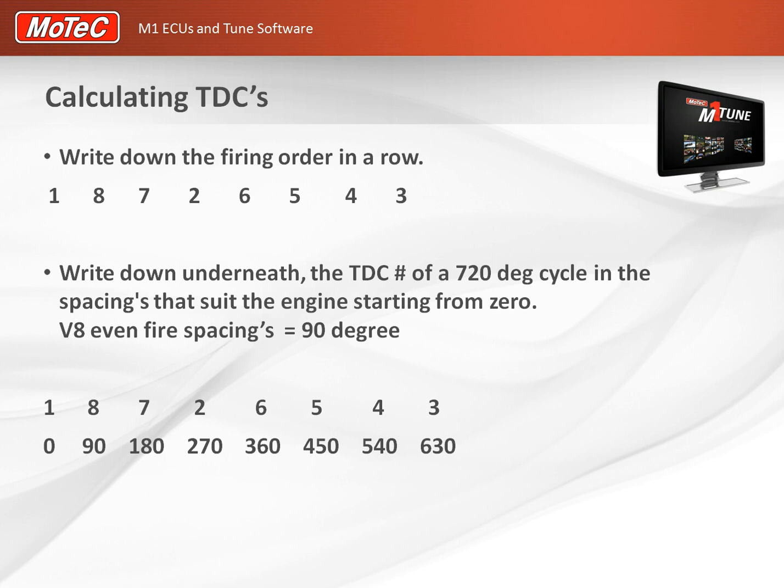With our firing order written down, we also note the spacings for a two-rotation (720 degree) engine cycle: 0, 90, 180, 270, 360, 450, 540, 630 degrees and so on. Write that down neatly alongside your firing order.